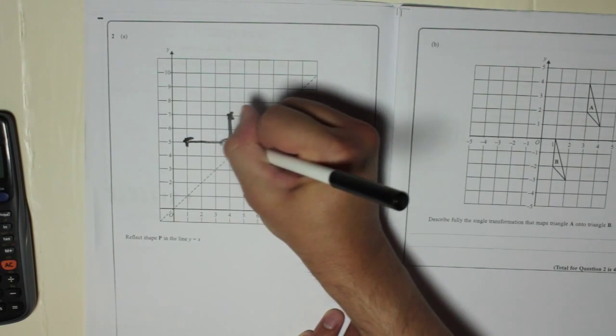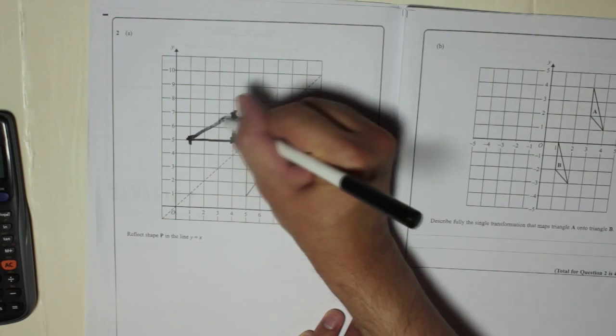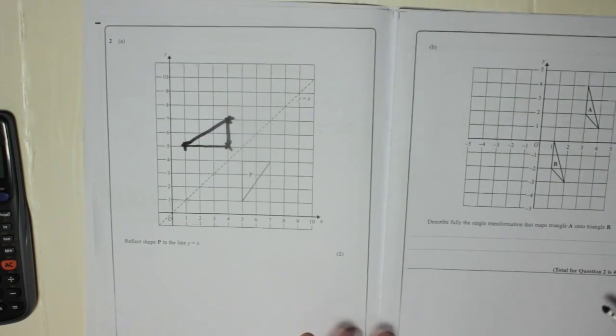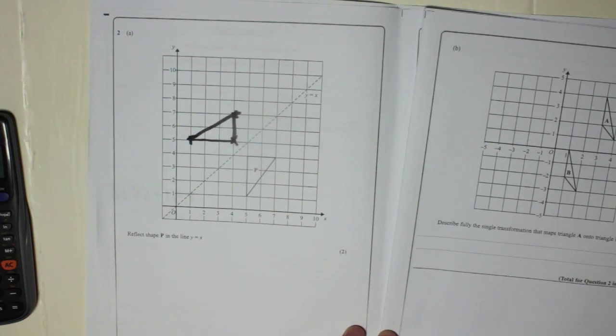And then join it up. I'll do it quickly, but you'll use a ruler, won't you? Okay, there's our reflection. If you look, you can do it diagonally just to make sure.